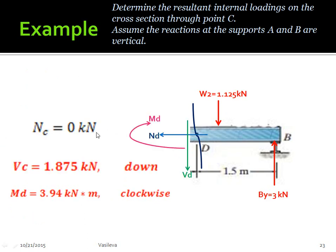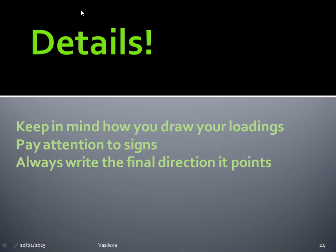Now that we've solved for all three internal loadings—MD is 0, VD is 1.75 pointing down, and MD is 3.94 clockwise—I highly suggest that every time you write the magnitude and the direction instead of involving negative or positive signs, because that'll just confuse you. Make sure you're paying attention to details when doing these problems. Keep in mind how you are drawing your loadings. You can draw them in any random way you want, but as long as you pay attention to signs, you will always come out with the correct final direction and the correct answer.